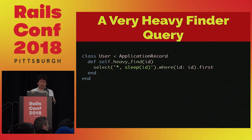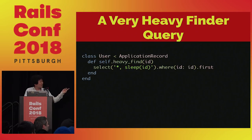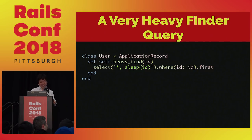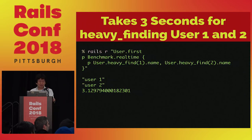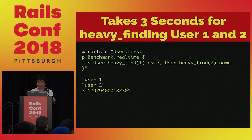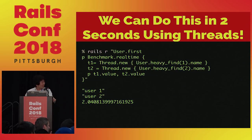Let me show you an example. Consider we have a very heavy query: when it selects a user, it sleeps the same number of seconds as the user ID. It's a silly example, but you get the idea. It takes three seconds to select user one and user two serially. Using threads, we can do this in two seconds.